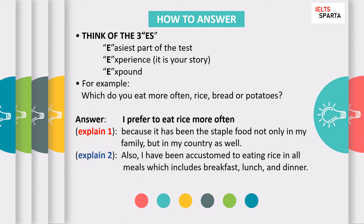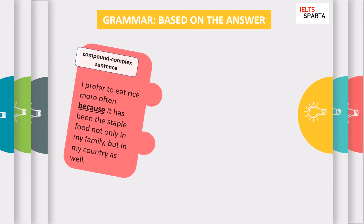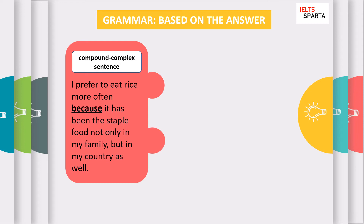The key in IELTS speaking part one is to be natural — the conversation should feel like you're talking to someone you've just met who's asking basic information about you. Next, check what grammar you use. You should use compound-complex sentences when giving your answers. Try to avoid simple sentences. There are four types: simple, compound, complex, and compound-complex. During the exam, you'll first have an initial interview covering your name, candidate number, job, and place of residence.